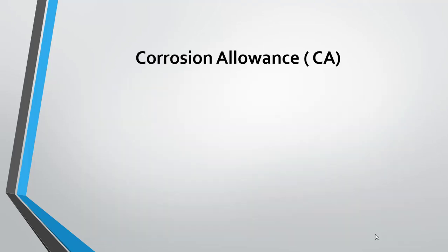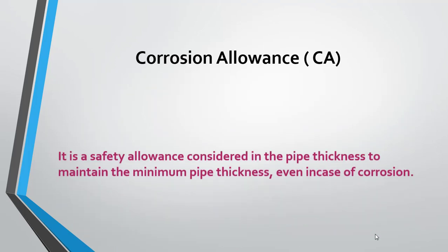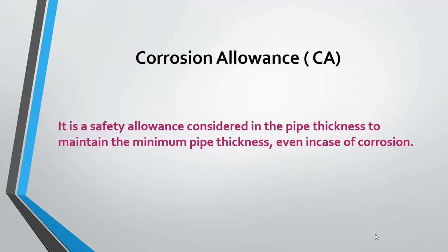The third area is corrosion allowance. Corrosion allowance is a safety allowance considered in the piping thickness to maintain the minimum piping thickness even in case of corrosion. Generally, corrosion allowance is considered only for carbon steel. For stainless steel and alloy steel, corrosion allowance is not considered at all.